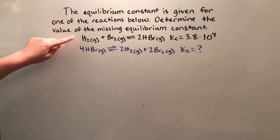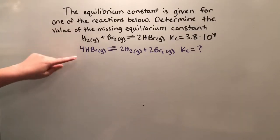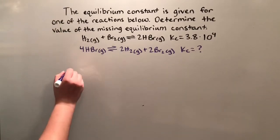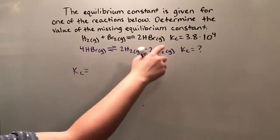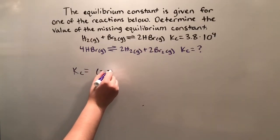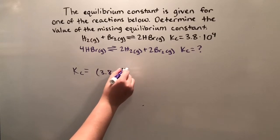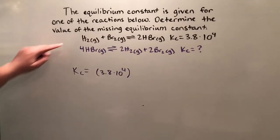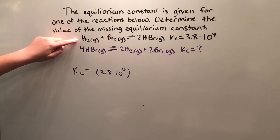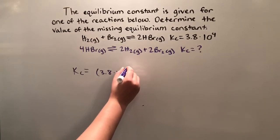So that means we multiply this original equation by two to get this equation. So we know that to find our Kc value for the final equation, we're going to need to take our original Kc value, 3.8 times 10 to the 4, and raise it to the integer that we multiplied this equation by, which we found was two.